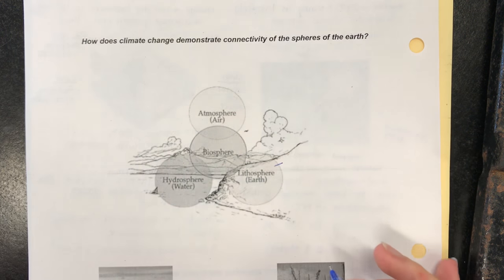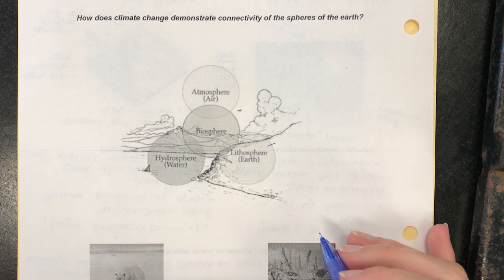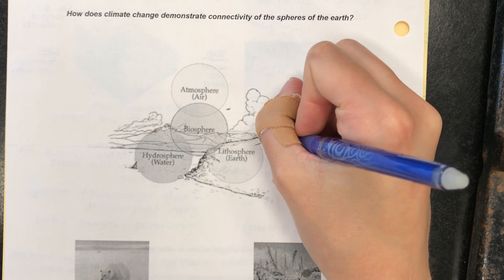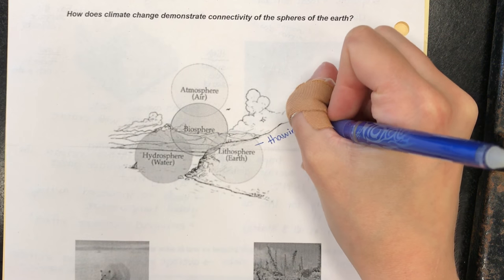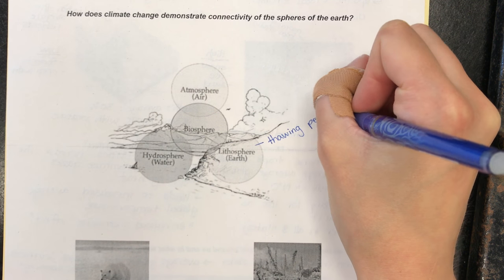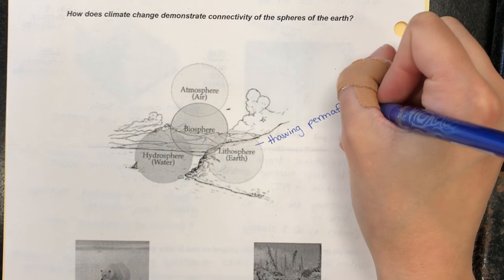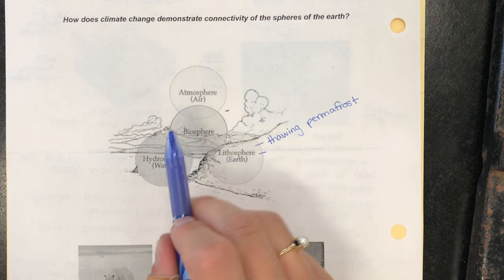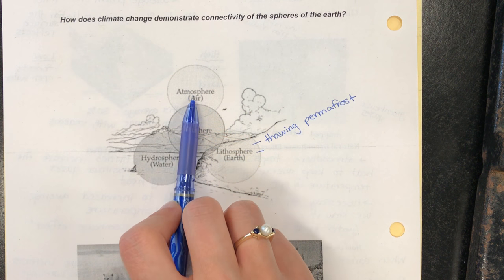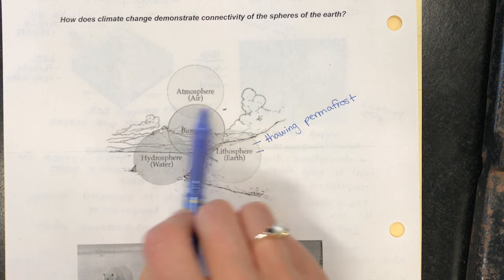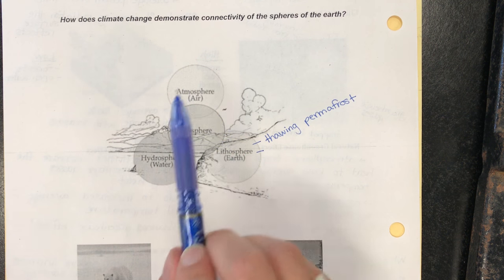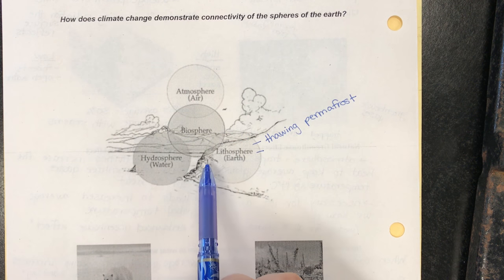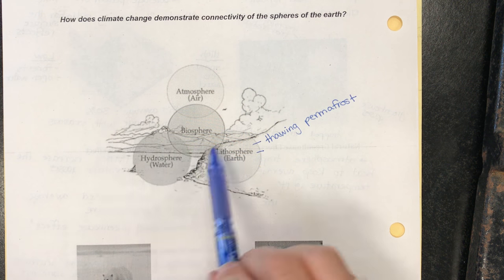The first thing that comes to mind when you think of greenhouse gases being produced from the lithosphere is thawing permafrost. Thawing permafrost creates more carbon dioxide and methane which increases the amount of greenhouse gases in the atmosphere, which then increases temperature and causes ice to melt and so on and so forth. Each time you add something to your diagram it's going to affect the other spheres.